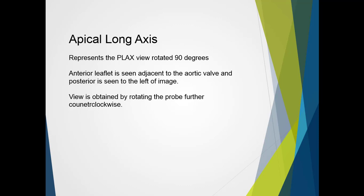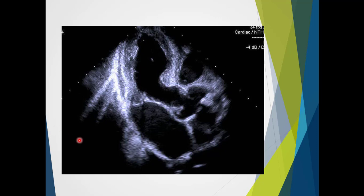Moving along, we come to the apical long axis view. This basically represents the parasternal long axis rotated 90 degrees, so instead of the heart being horizontal, it is now vertical in the image. The anterior leaflet is seen adjacent to the aortic valve, and the posterior is seen to the left of the image. This view is best obtained by simply rotating the probe further clockwise in the apical window. We can see the posterior leaflet and then the anterior leaflet clearly.